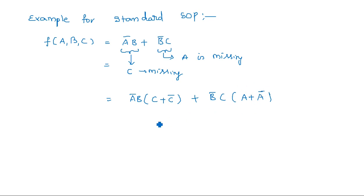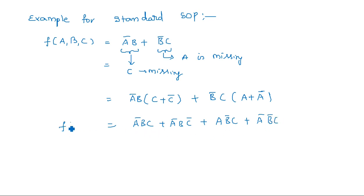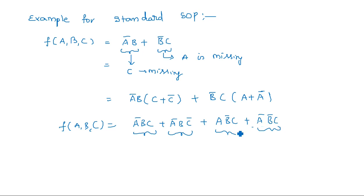Expanding: Ā̄B·(C + C̄) gives ĀBC + ĀBC̄. And B̄C·(A + Ā) gives AB̄C + ĀB̄C. This is the standard SOP form. Every term in the standard SOP consists of all the variables — A, B, and C — making each term a proper min term. This is how standard SOP is formed.